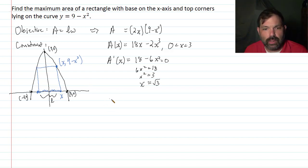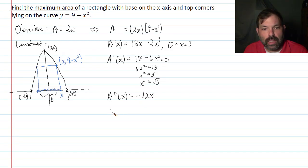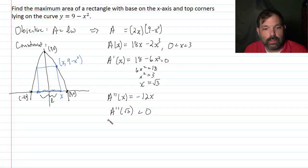I'll again use the second derivative test here. A double prime of x would then be negative 12x. And so then a double prime of root 3 would be negative. So x equals root 3 yields a maximum.